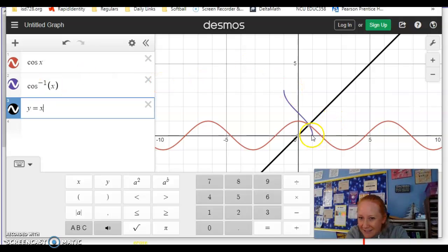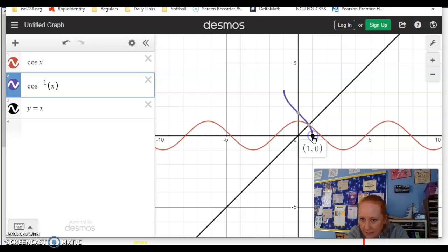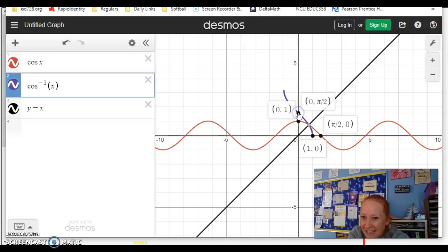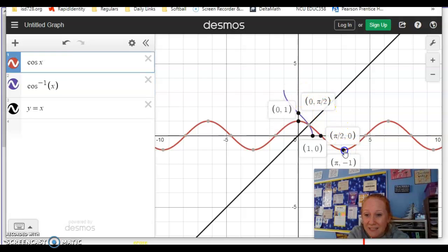Do you see this point right here? This point came from this point. Look at that. Now this point came from this point right here. And then this point came from this point.